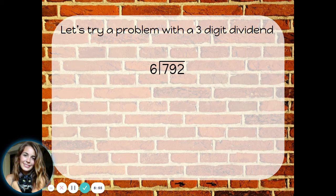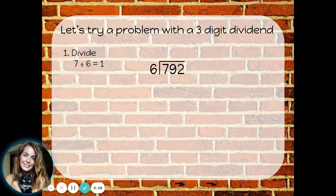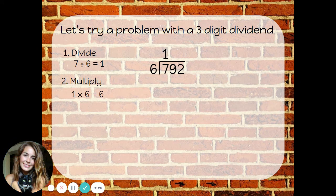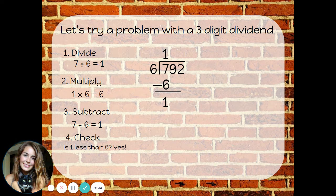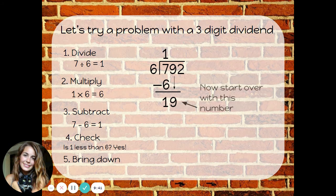Let's try a problem with a three-digit dividend this time. We're going to do the same thing — we'll just have to go through the steps one extra time. I'm focusing on the 7 under the bracket first. I'm going to start by dividing 7 divided by 6. If I have 7, I can only make one group of 6 — that goes on top. Then I multiply: 1 times my divisor of 6. 1 times 6 is 6. Subtract: 7 minus 6 is 1. Check: is 1 less than 6? Yes. Bring down the 9 to sit right next to the 1. Now I'm starting over with the number 19 that I created at the bottom.